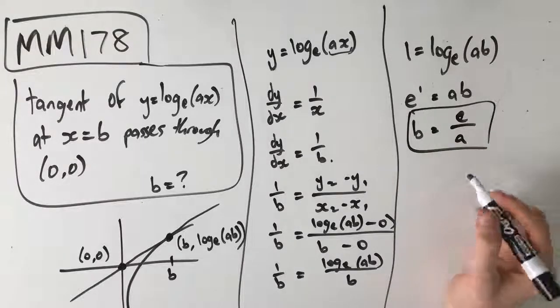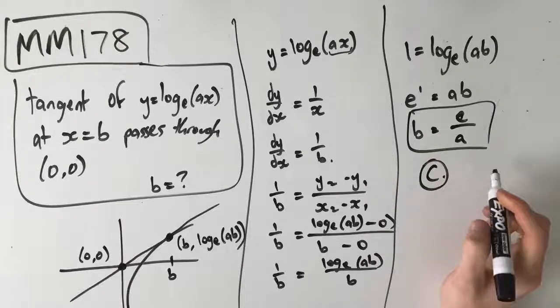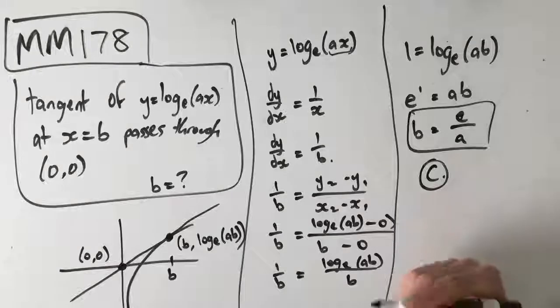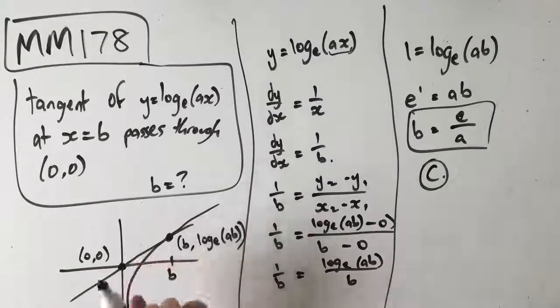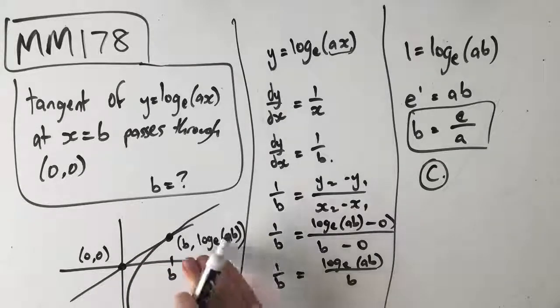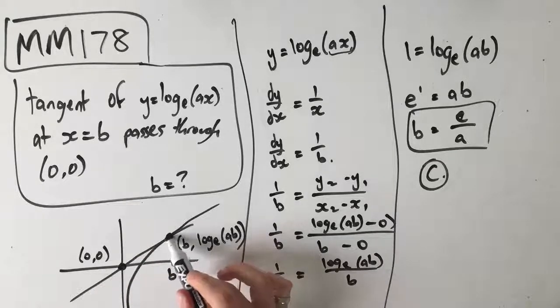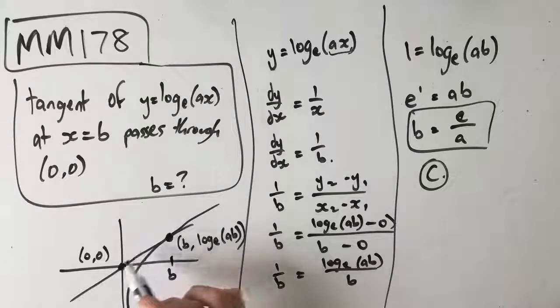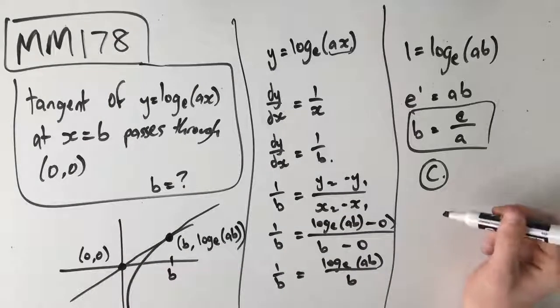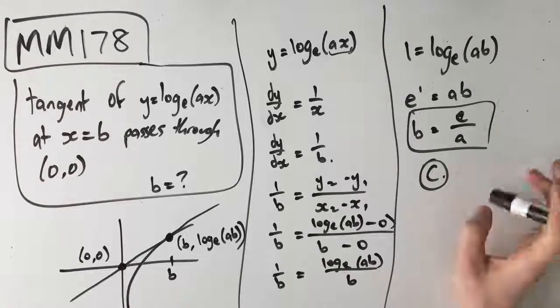This gives us our answer of C. I know this is tricky, but as you see these questions, have a go at them and see if you can make the connection between the gradient and the rise over run. That's often what you need to do in these questions: find the instantaneous gradient at this point and equate that to the gradient of the tangent between two points. Hit me up if you have any questions, but otherwise have a great day.